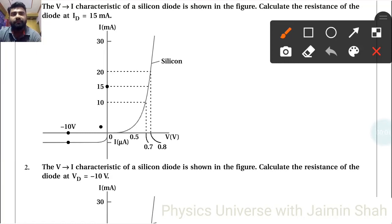The V-I characteristic of a silicon diode is shown in the figure. Calculate the resistance of the diode at ID = 15 milliampere. So here resistance that we have to find, R is equal to ΔV upon ΔI.